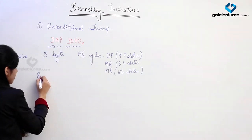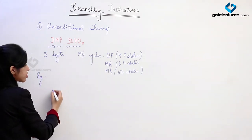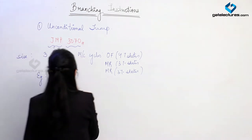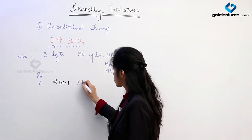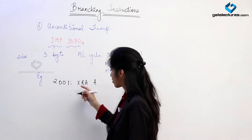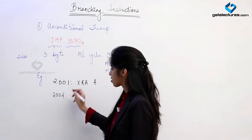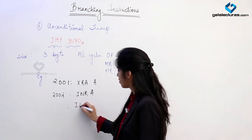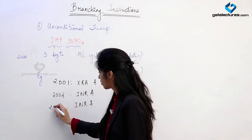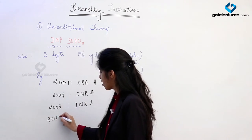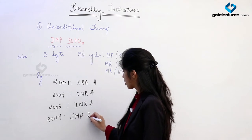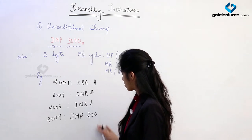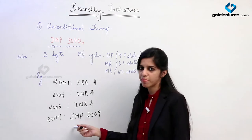Suppose we are having a program starting from memory location 2001. The first instruction was XRA A — this is a 1-byte instruction. Next instruction at 2002 was INR A, then again INR A at 2003. The next memory location 2004 had the instruction JMP 2009.